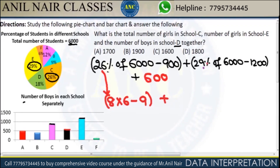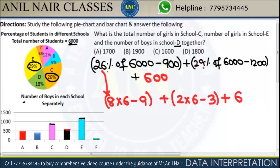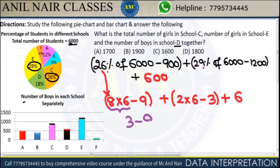Next, 29 digital sum is 2 plus 9, which is 11. 11 is nothing but 2. It is 2 into 6. Minus — 1200 digital sum is 1 plus 2, which is 3. 600 digital sum is 6. Again further simplify: 8 into 6 is 48. 48 is not a single digit, so add again: 4 plus 8 is 12, which is nothing but 3. It is 3 minus 9. 2 into 6 is 12, which is nothing but 3. It is 3 minus 3 plus 6.